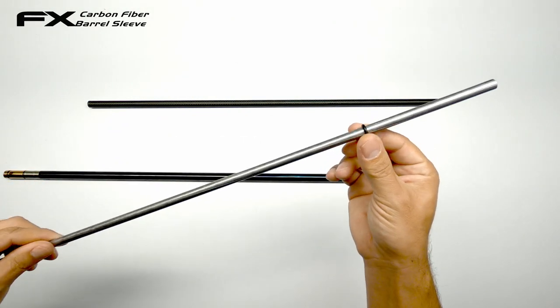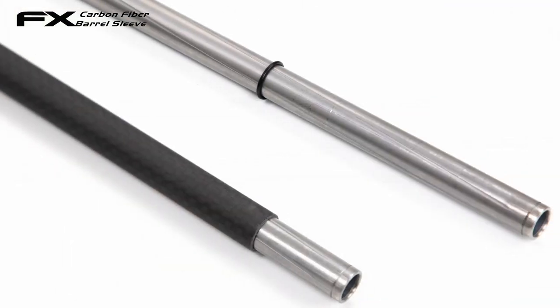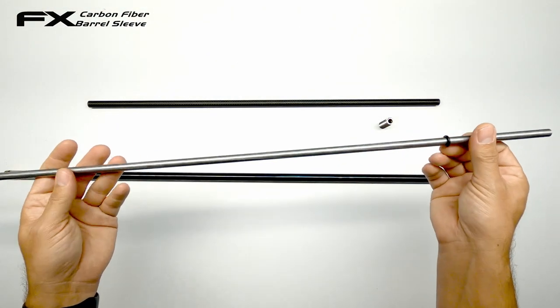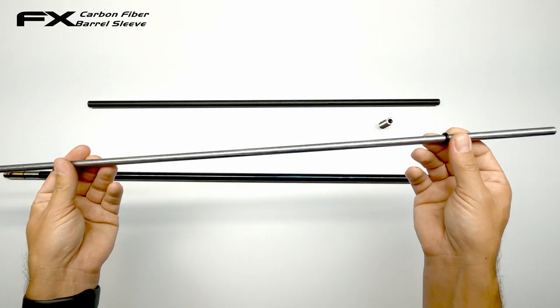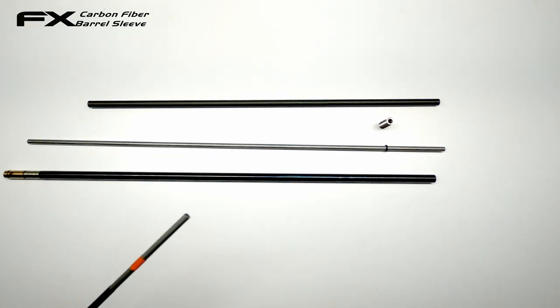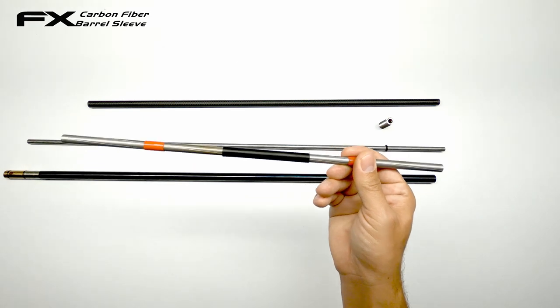Originally there are three o-rings at different spots on the liner to keep it center in the barrel housing. But we all know there's a bit of a pain to get them installed into the barrel again. Not knowing if they moved from place and if they are where they really need to be.